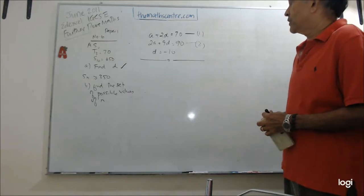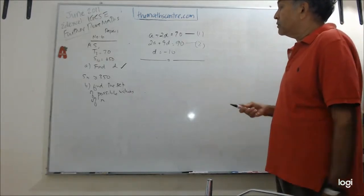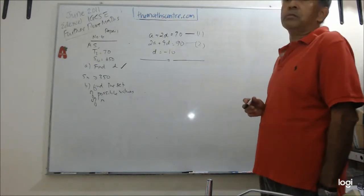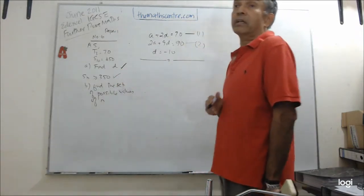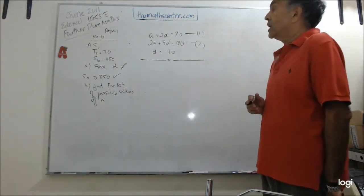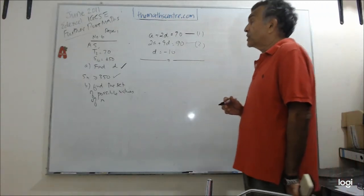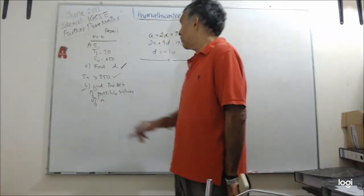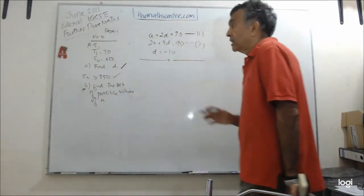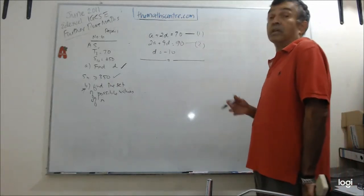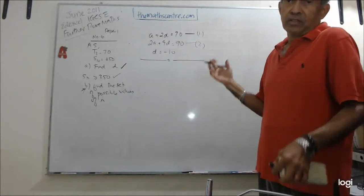Let's come back to this question. In part B they tell us that the sum to N terms is bigger than or equals to 350. They give us this, and the question in part B is find the set of possible values of N. They gave us that the sum to N terms is bigger than or equals to 350 and they ask you to find the set of possible values of N.